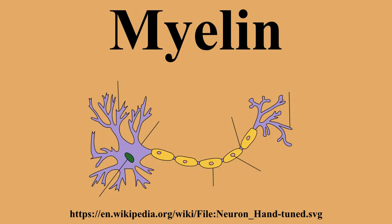Each time the action potential reaches a node of Ranvier, it is restored to its original action potential. When a peripheral fiber is severed, the myelin sheath provides a track along which regrowth can occur. However, the myelin layer does not ensure a perfect regeneration of the nerve fiber. Some regenerated nerve fibers do not find the correct muscle fibers, and some damaged motor neurons of the peripheral nervous system die without regrowth.